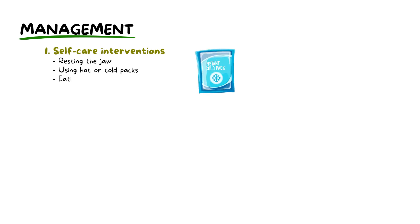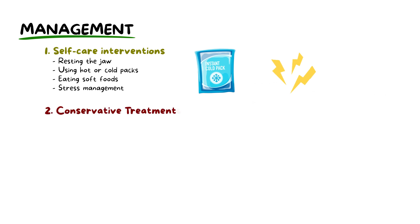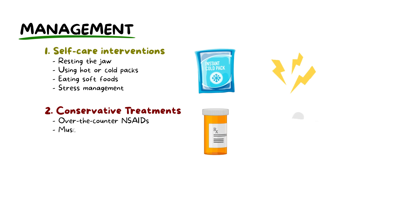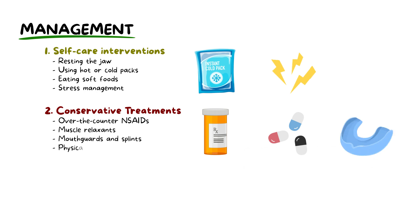Treatment depends on severity and underlying causes, but generally there are three main approaches. Approach number one is self-care interventions, which includes resting the jaw, using hot or cold packs, eating soft foods, and stress management. Approach number two is conservative treatments, and this includes over-the-counter nonsteroidal anti-inflammatory drugs like ibuprofen, muscle relaxants, mouth guards or splints, and physical therapy.